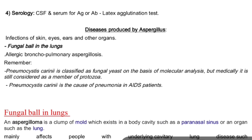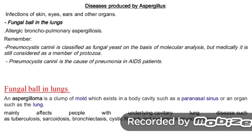Aspergillus causes infection of skin, eye, ear, and other organs, and a fungal ball in the lungs called aspergilloma. Pneumocystis carinii is classified as a fungal yeast on the basis of molecular analysis, but medically it is still considered a member of protozoa. Pneumocystis carinii causes pneumonia in AIDS patients. Aspergilloma is a clump of molds in a body cavity such as a paranasal sinus or the lungs, mainly affecting people with underlying cavitary lung disease such as tuberculosis, sarcoidosis, bronchiectasis, or cystic fibrosis. Diagnosed by IgG antibody test and chest X-ray.